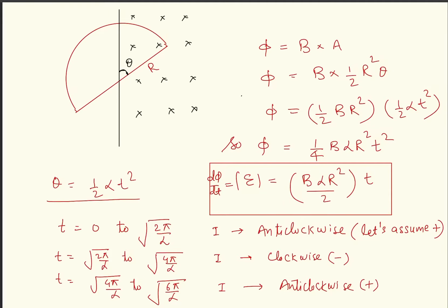Since it is rotating with angular acceleration alpha, theta equals half alpha t squared. From 0 to pi angle rotation, the time taken is root of 2pi by alpha. When the loop has rotated by pi, the semicircle is fully inside the magnetic field — flux has been increasing. After this, the loop starts coming out of the magnetic field and flux starts decreasing. So from 0 to pi, current flows in one direction; from pi to 2pi, current direction reverses; from 2pi to 3pi it changes again; and from 3pi to 4pi it reverses again.